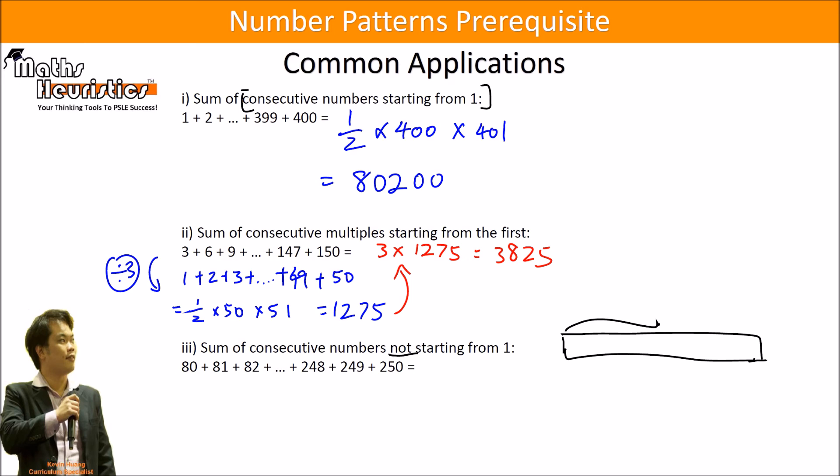So how do we manipulate this? We will see that the total here is 1 plus 2 plus 3 all the way until 250. But the terms that I want is the sum of 80, 81 all the way up to 250. So I'll need to chop off this tail which is 1 plus 2 plus 3 all the way up to 79.